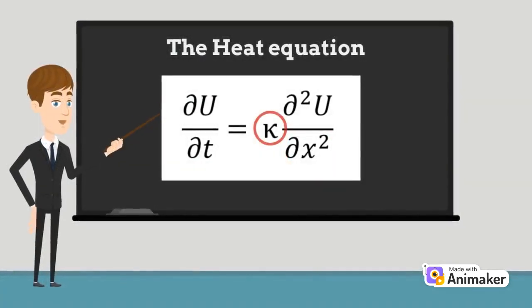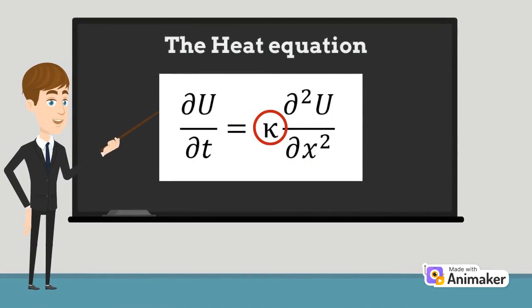The constant kappa, which is sometimes denoted as alpha, represents the thermal diffusivity. Thermal diffusivity is a property that is unique to the medium and is the rate of heat diffusion within the given medium.